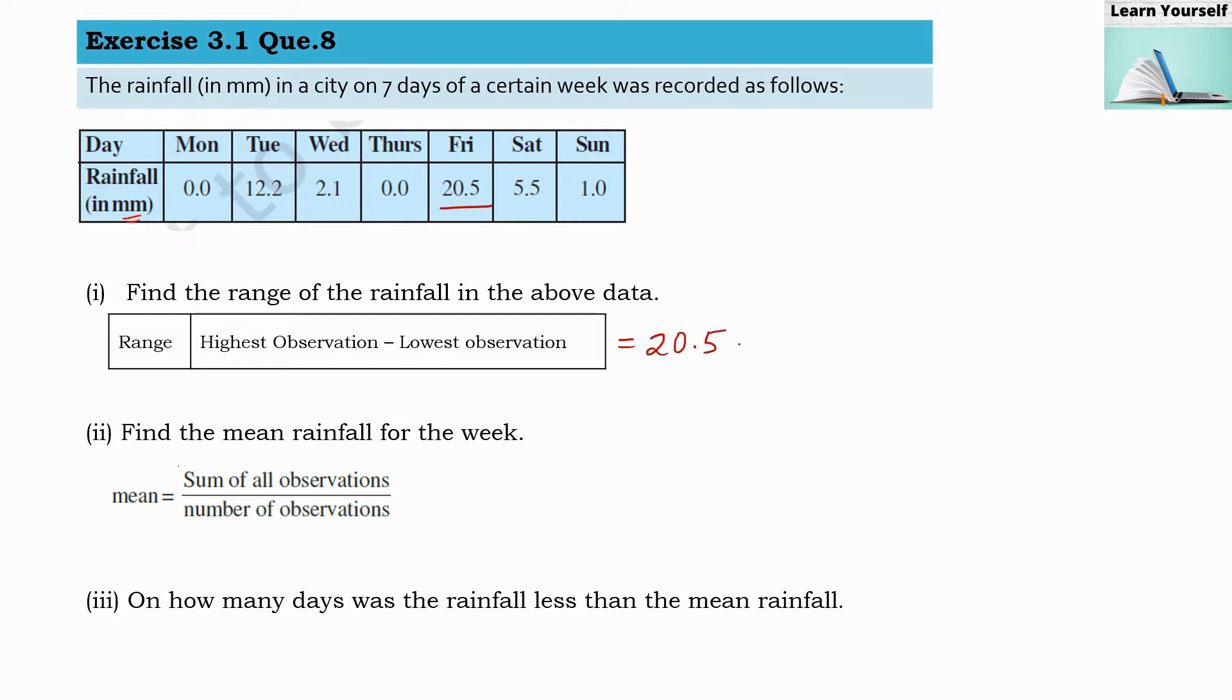So 20.5 minus, we are going to check now lowest observation. 0.0 is going to be the lowest observation. When we subtract this we will get 20.5 millimeters, because it's rainfall so we are going to maintain this unit.